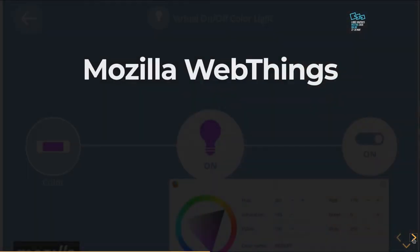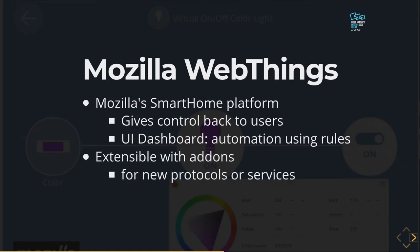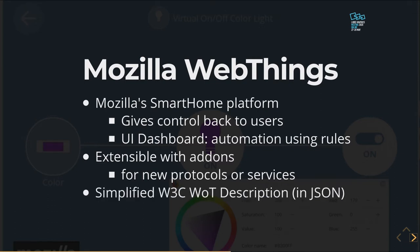Let me talk about the WebThings platform. It's smart home software you can use to control all your devices. All devices are connected to a gateway and you have total control — no third-party cloud involved. Everything is made with privacy by design. You control everything from a UI dashboard which is very simple for creating basic automation. It's extensible so you can support new devices or new protocols, and there are hundreds of community contributions. Everything was possible because it was made on the simplified version of the Web Things description from W3C.